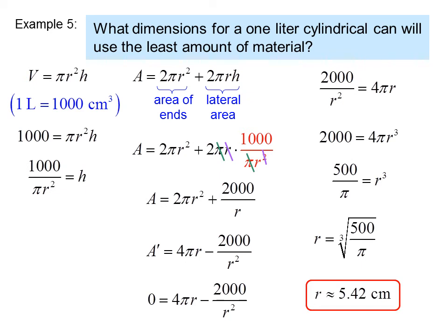Now we know this is going to give us a minimum amount of material, because the endpoints in this equation don't actually make any sense physically. That is having a radius of zero or a height of zero.